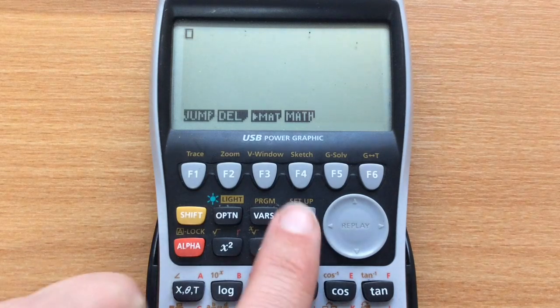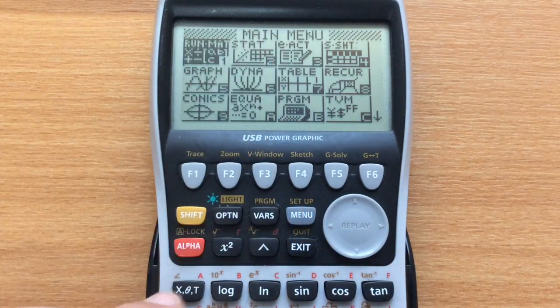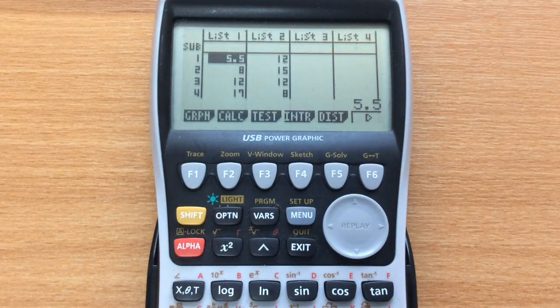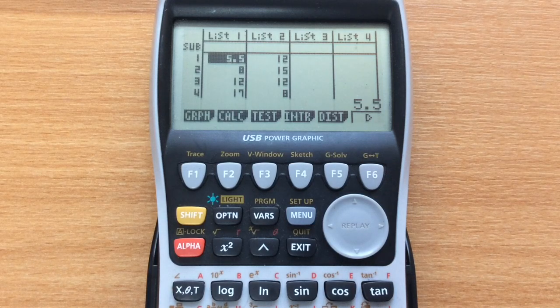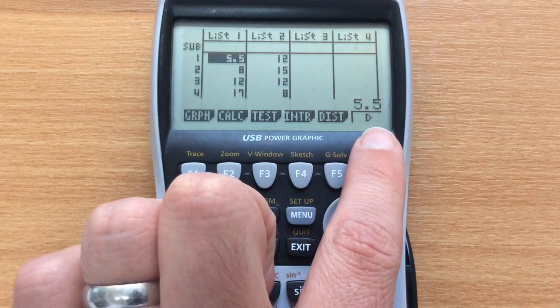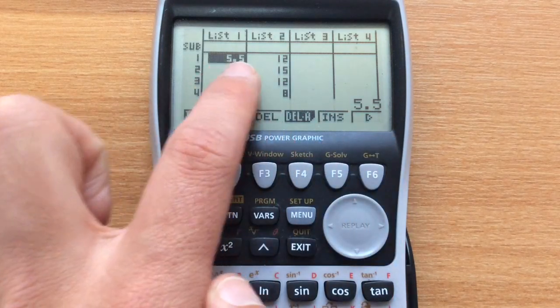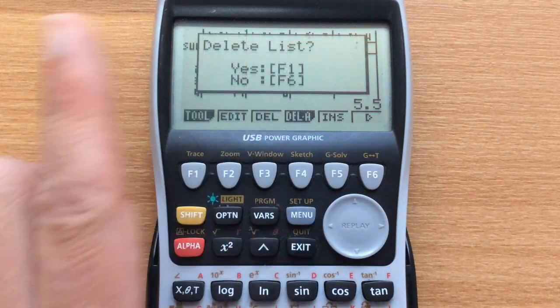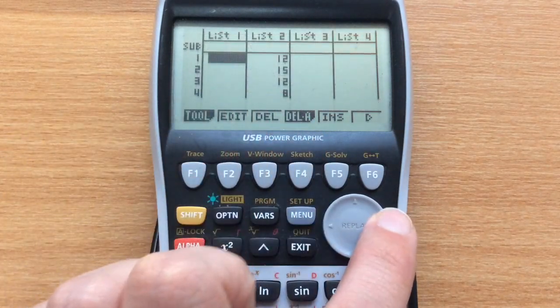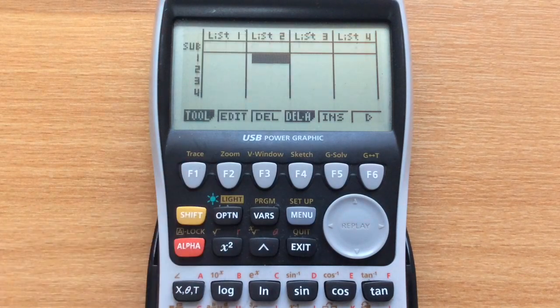The first thing we need to do is go into the stats mode by pressing 2 or using the arrows to navigate. Now I've got some old data in here, so I want to delete this and put some new data in. Press the arrow button to access more modes, and we can delete which will delete one entry, or delete all which will delete everything in the list. I'll say yes and delete all the data from that list.